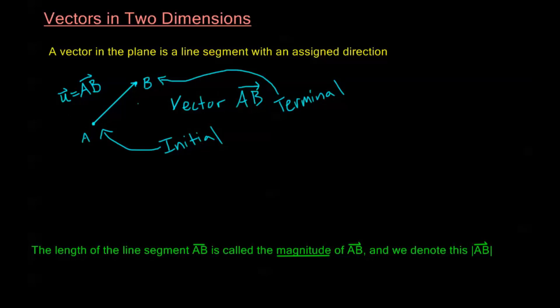Now, the length of this line segment, AB, is called the magnitude of the vector. So, we've had a couple different versions of this.